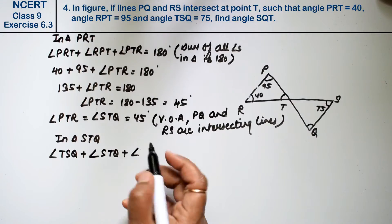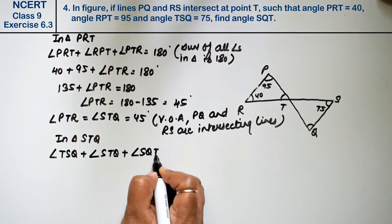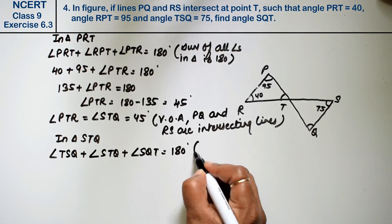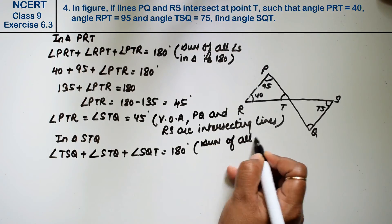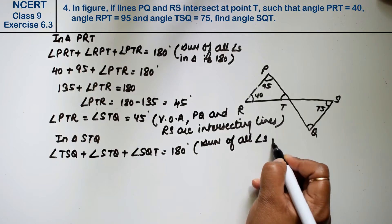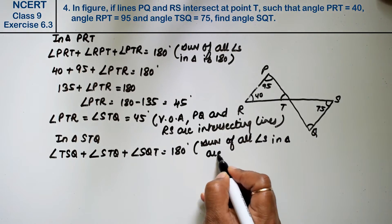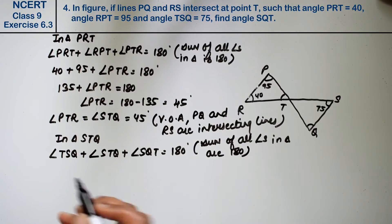So angle SQT equals 180 degrees. Why? Because sum of all angles in a triangle are 180 degrees. Right.